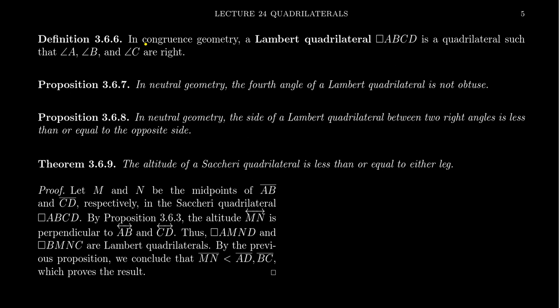This definition is valid in a congruence geometry. In fact, we don't even need notions of betweenness here. We just need to know notions of congruence of angles, and particularly what a right angle is, and with that we can define a Lambert quadrilateral.